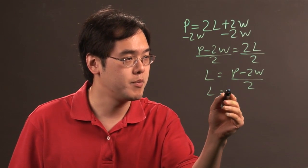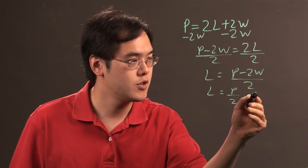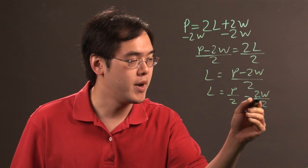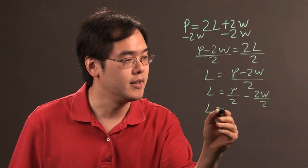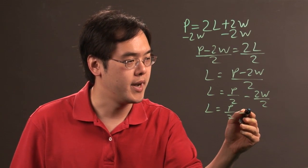Now if you like, you can split it up into two separate terms: p over 2 minus 2w over 2, and l is equal to p over 2 minus w.